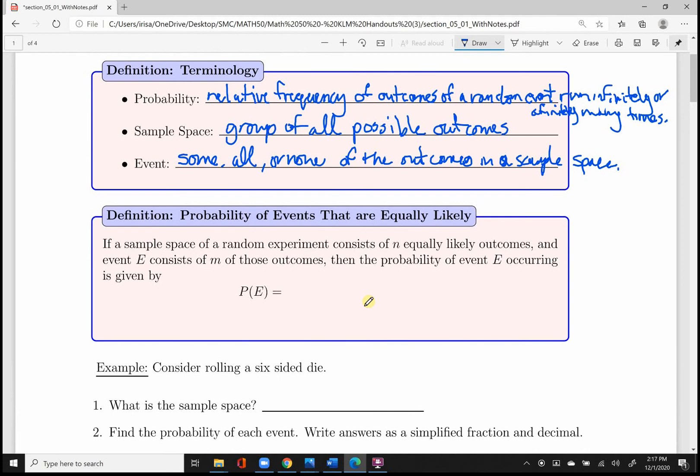So there's some notation that we need to get introduced to. And that is this probability of events that are equally likely. So the probability of event E occurs if there are M outcomes associated with an event, and there are N equally likely outcomes from a random experiment. The probability of event E occurring is given by M over N. Again, just to be clear, N is, in a sample space of a random experiment, consists of N equally likely outcomes. And M is the number of a specific collection of outcomes associated with an event.